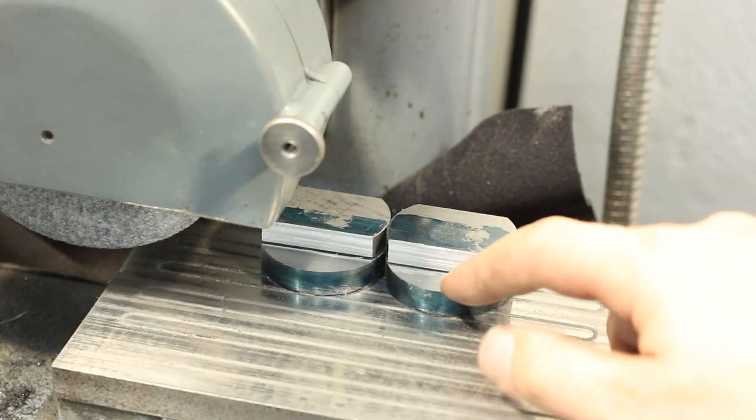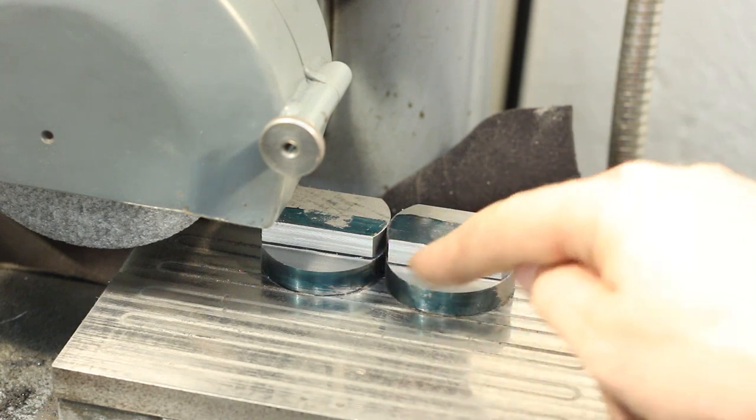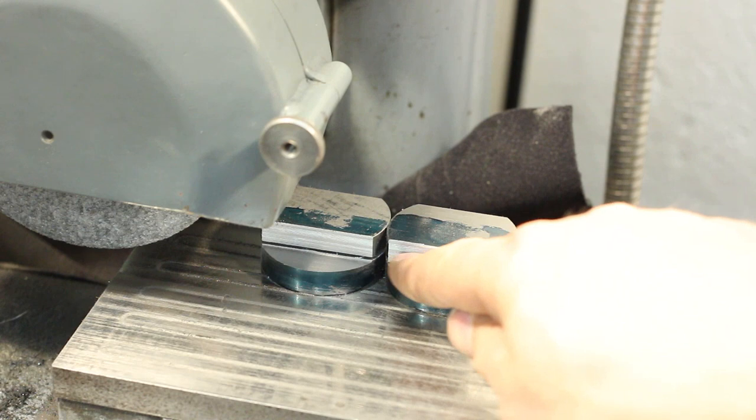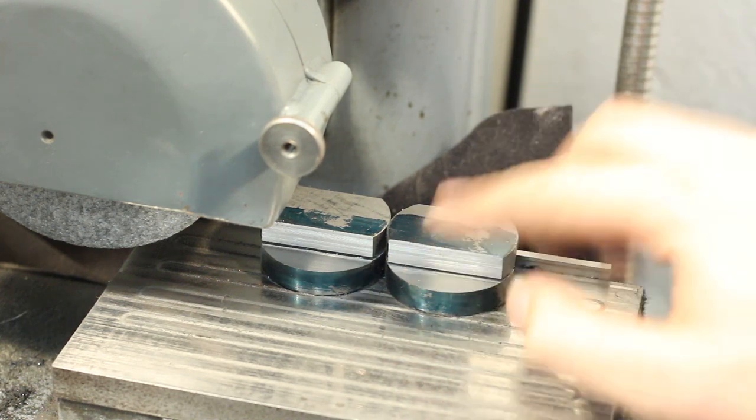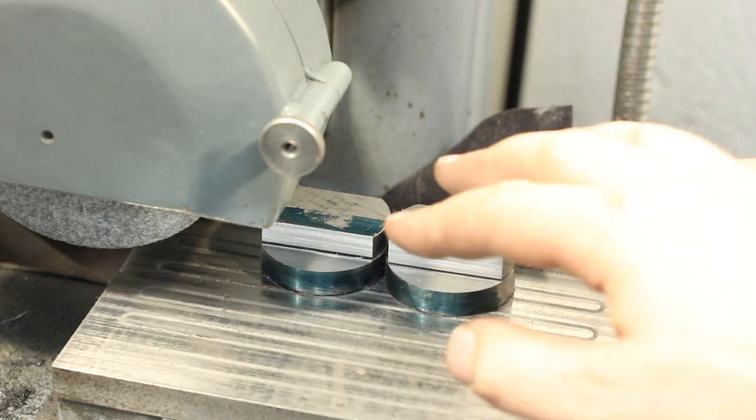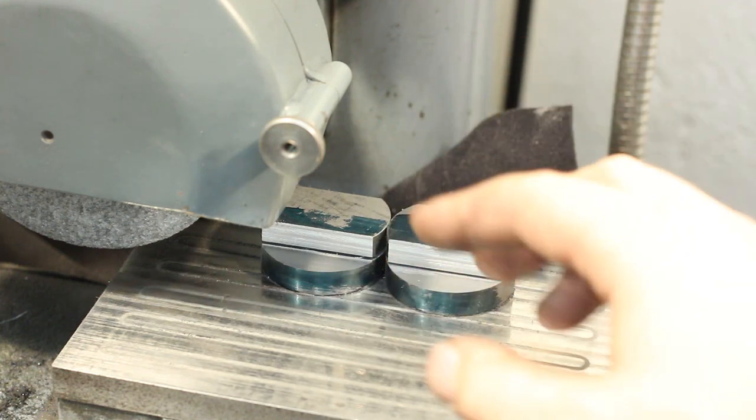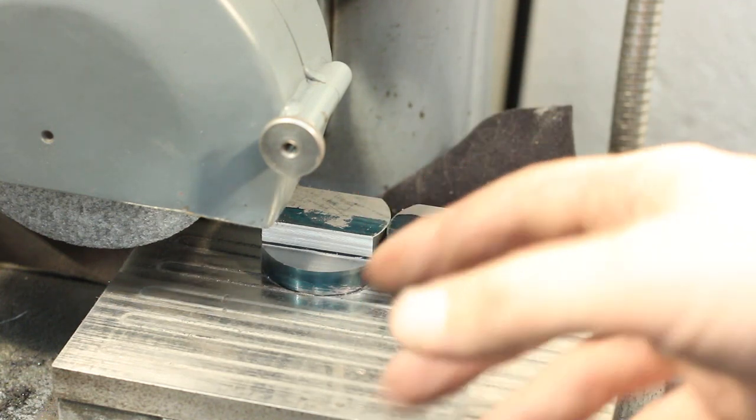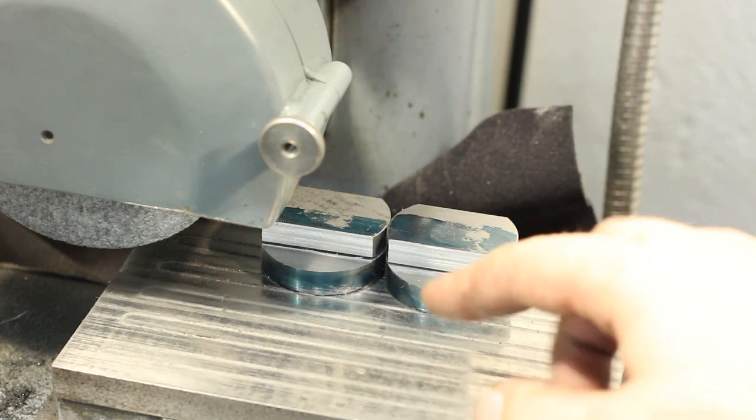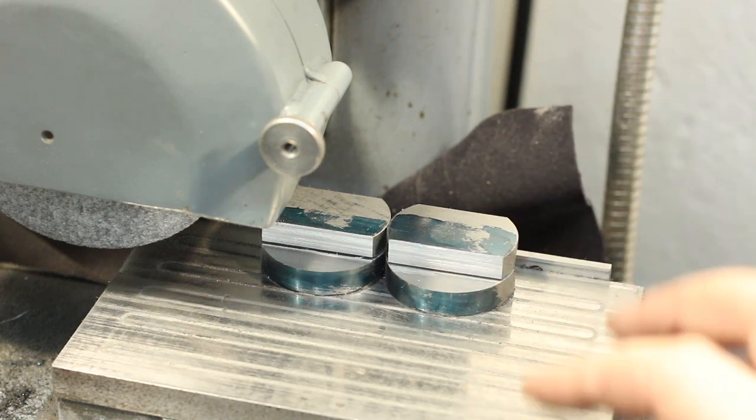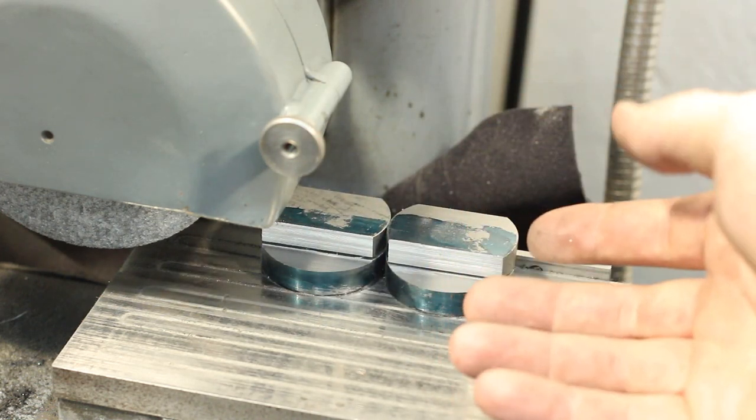I surface ground the cutout in the clamping elements, ground the bottom surface and I side wheeled this vertical wall just to clean them up. I didn't go for a specific dimension. I bandsawed it with roughly 2 to 3 tenths of a millimeter stock allowance and then I ground until the surface cleaned up completely. That's good enough as it's just clearance.